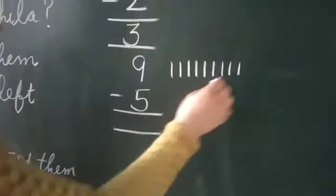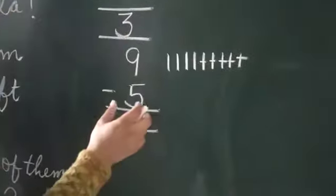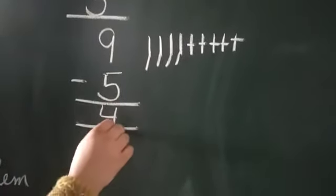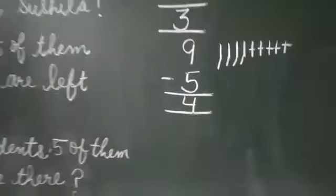Cut the five lines: one, two, three, four, five. Now count these lines: one, two, three, four. Answer is four. Ab tree par kitne birds hai? Four.